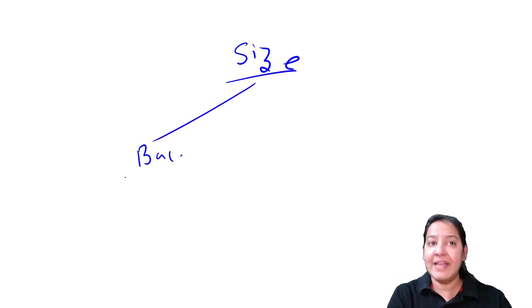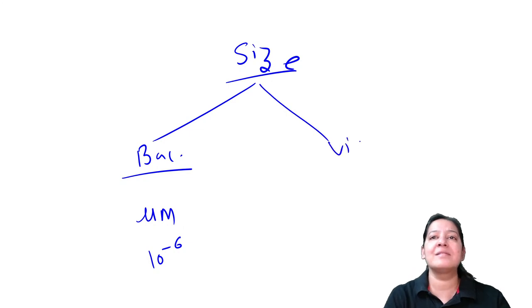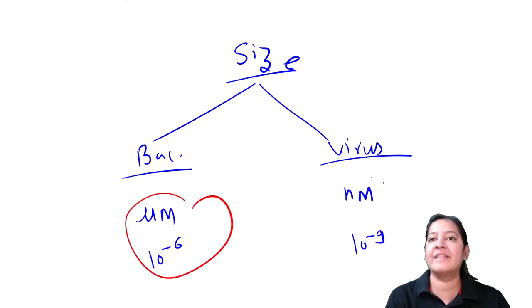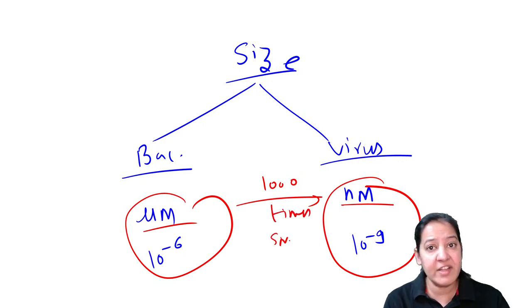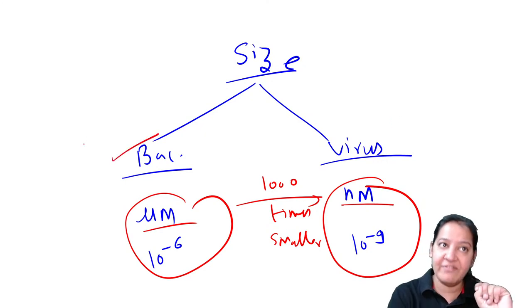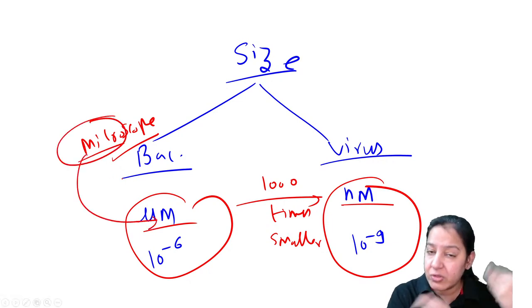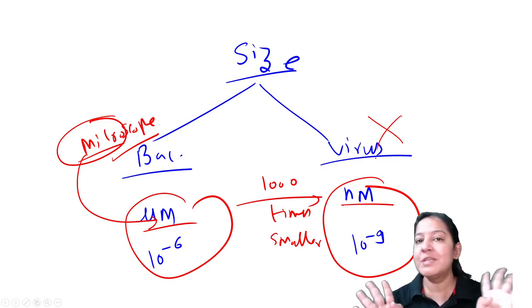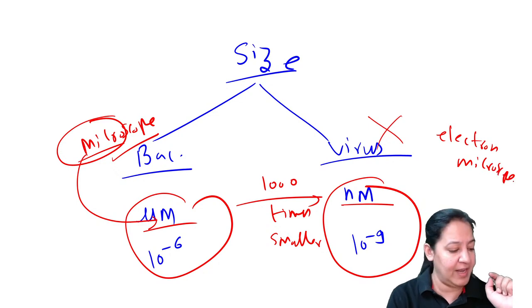What is the size of the virus? Bacteria are measured in micrometers - micro means 10 to the power minus 6 - that is why they are visible under microscope. Viruses are measured in nanometers - nano means 10 to the power minus 9. Viruses are therefore a thousand times smaller than bacteria. Because of this, viruses are not visible under light microscope. You have to use electron microscope to see a virus.